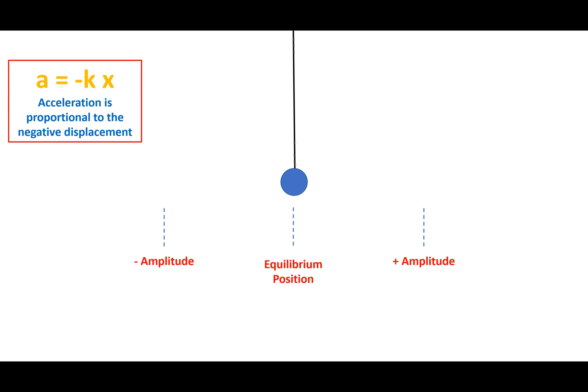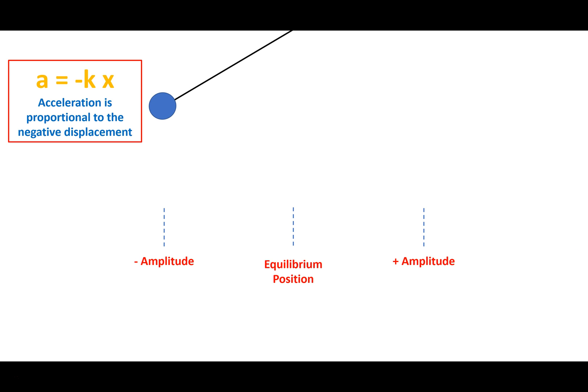We have to remember the overriding formula for simple harmonic motion is a equals minus kx, or the acceleration of an object undergoing simple harmonic motion is proportional to the negative displacement from its equilibrium position. If I pull my pendulum up to its amplitude, at that point it has its maximum possible displacement from the equilibrium position, and that means it will have its maximum possible acceleration.